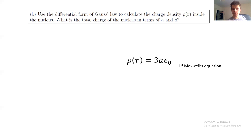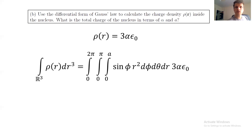And rearrange this expression to get this. So, as I said before, this is a constant charge distribution. And now from here, we can actually calculate the total charge inside the nucleus in terms of alpha and A.